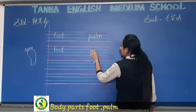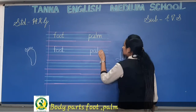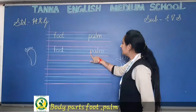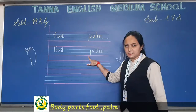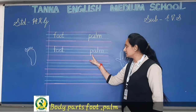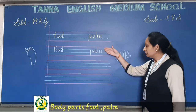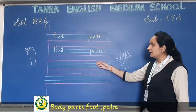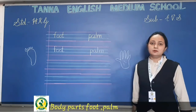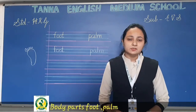P, A, L, M. See students — P. From the second line to the fourth line, you will not start from the top — it is a small letter. So you have to complete this whole line. Foot and palm, you have to complete in your CW book and HW book.